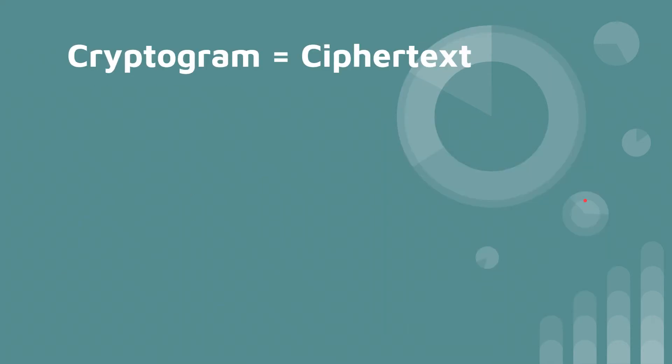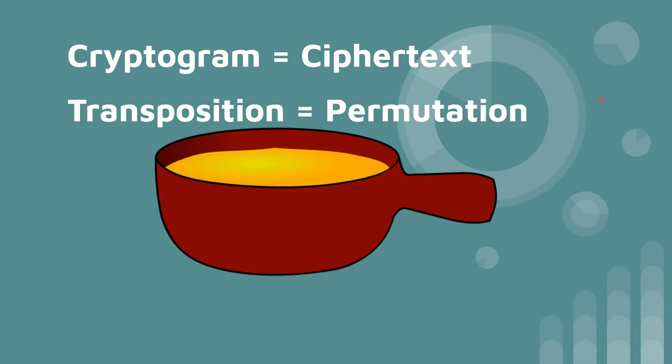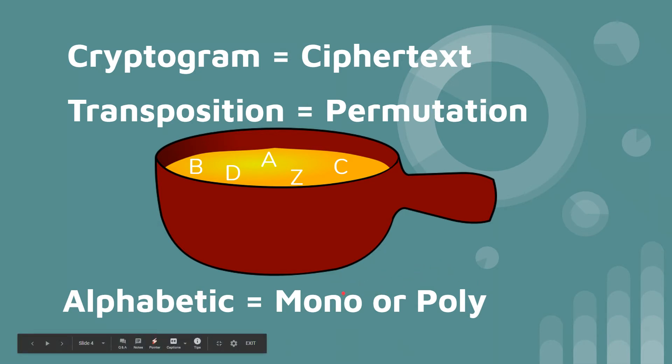Some additional terms here cryptogram is the same thing as ciphertext. Transposition and permutation are the same thing. Transposition basically means that you're rearranging the letters so your original message is just going to look like alphabet soup. Speaking of alphabets you have this term alphabetic. You have mono-alphabetic or poly-alphabetic. Mono-alphabetic means you're using one alphabet for your encryption algorithm or poly-alphabetic which means you're using multiple alphabets for your algorithm for your characters.